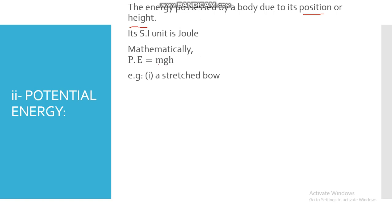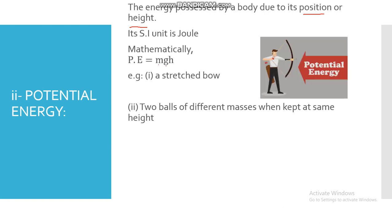Some examples of potential energy: one example is a stretched bow. When a bow is stretched, energy is stored in it. As soon as we release it, it moves very quickly — the stored potential energy converts into kinetic energy because the body goes into motion. This is one example of potential energy. As shown in the diagram, the more you stretch the bow, the more energy is stored.